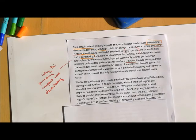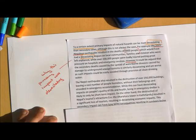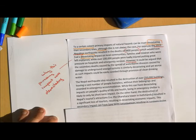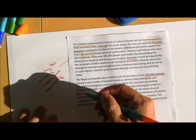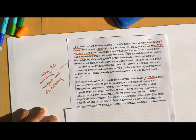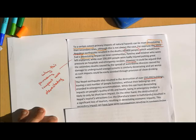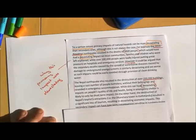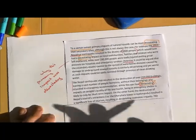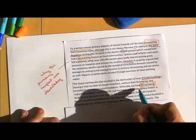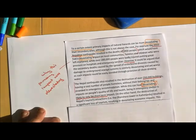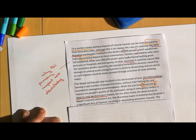Moving on down then. The Nepal earthquake also resulted in the destruction of over 250,000 buildings. Again, I've given prime examples of a short-term impact, leaving a vast number of people homeless, without their belongings, and stranded in emergency accommodation. Again, clear explanation of why that would be devastating. While this can have a devastating impact on people's quality of life and health, being in emergency shelter is likely to only be a short-term impact. Clear use of that term devastating, that signposting word that we talked about earlier, and I've started to show my hand in terms of my answer here, because I said being in a emergency shelter is likely only to be short-term. So I'm starting to form an argument that though I think it's important, it's not as important or devastating as the more long-lasting secondary impacts.